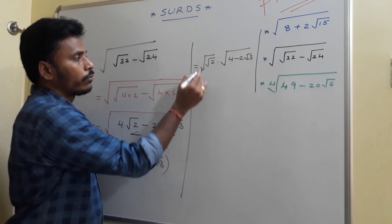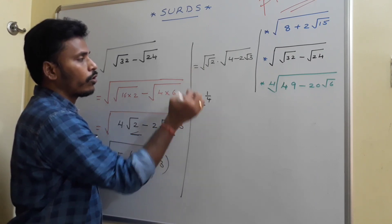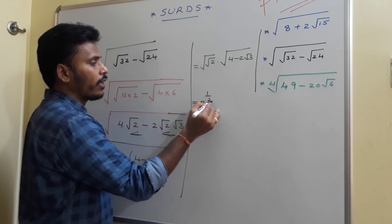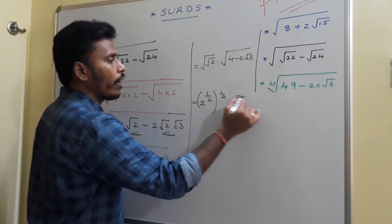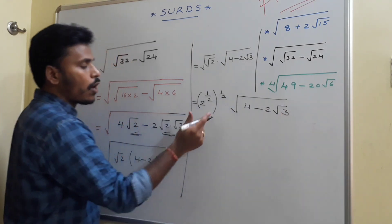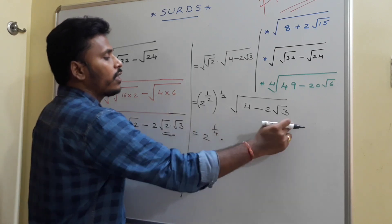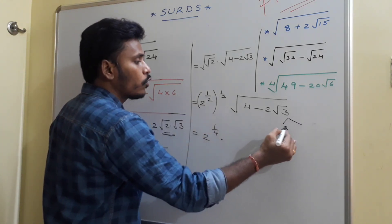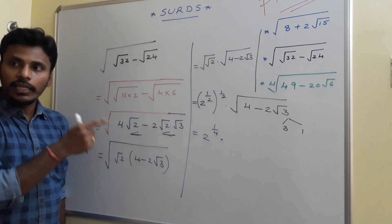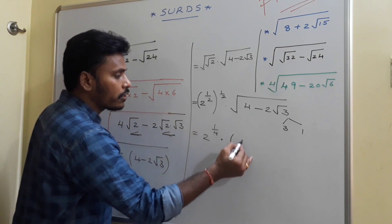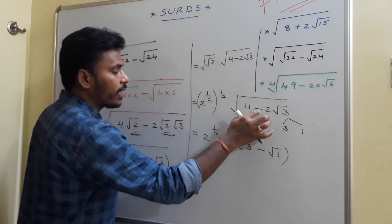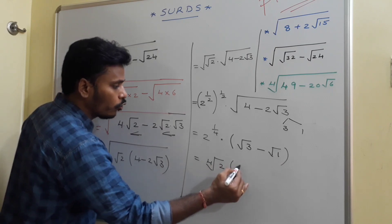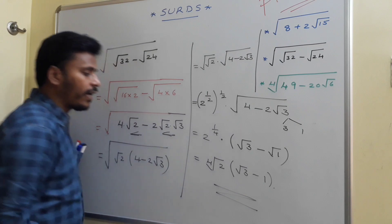So the expression becomes square root of root 2 times 4 minus 2 root 3, which equals 2 to the power 1 by 4 times square root of 4 minus 2 root 3. Now apply the direct method to square root of 4 minus 2 root 3: choose 3 and 1 since 3 times 1 is 3 and 3 plus 1 is 4. Because of the minus sign, the answer is root 3 minus root 1. So the final answer is the 4th root of 2 times root 3 minus 1.